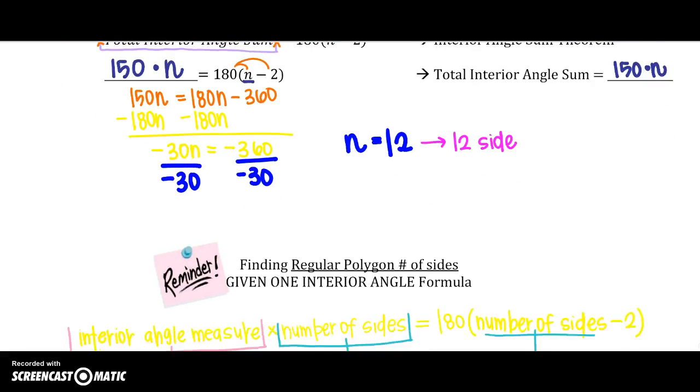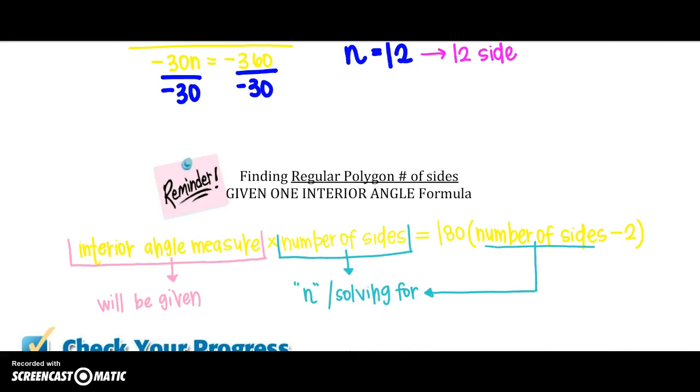Now, just as a reminder, and just something beneficial to write down, when you're finding a regular polygon's number of sides, and we're given one interior angle, here is our formula. We're going to say the interior angle measure times the number of sides equals 180 times the number of sides minus 2. Now, you will be given the interior angle measure, and you will be asked to find the number of sides n on both sides of the equation, so you can always refer back to that.